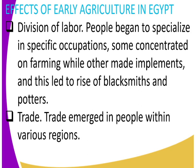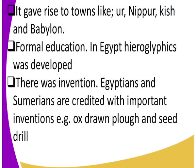Another effect of the development of agriculture in Egypt is that it gave rise to towns like Nippur, Kish, and Babylon. Babylon is one of the most famous and renowned cities in the world.